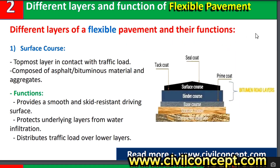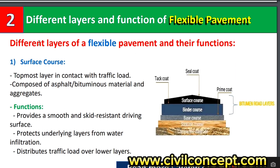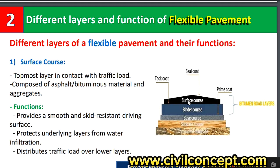Now let us discuss the different layers of pavement and their functions. Number one is the surface course — the topmost layer in contact with traffic load. Vehicles run on the surface course. As you can see in this picture, the topmost layer is the surface course, composed of asphalt, bituminous materials, and aggregate.